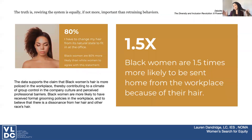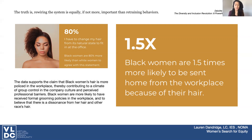My favorite example, mostly because it's incredibly personal to me, is the creation of the Crown Act, which is addressing inequity for Black women in the workplace. Data supports the claim that Black women's hair is more policed in the workplace, contributing to a climate where women have different professional barriers and are not able to succeed as much as their counterparts because of their hair. The Crown Act is now a law, proposed by State Senator Holly Mitchell here in California. It stands for Creating a Respectful and Open World for Natural Hair, and it prohibits race-based hair discrimination — the denial of employment or educational opportunities because of hair texture or protective hairstyles, including braids, locks, twists, or bantu knots.